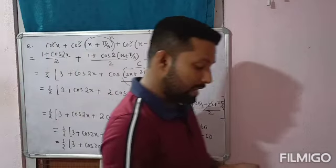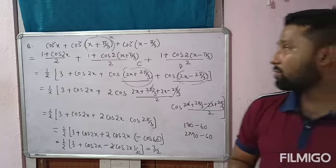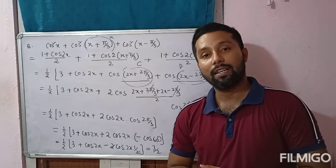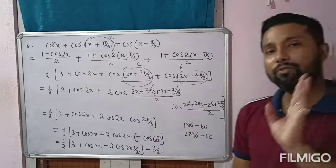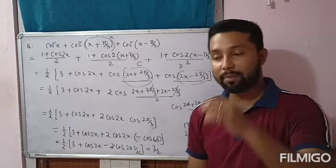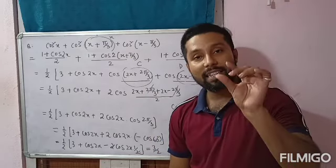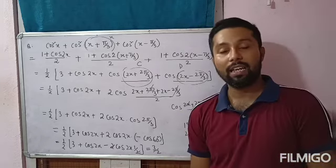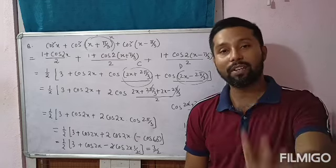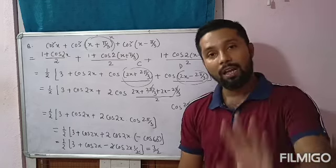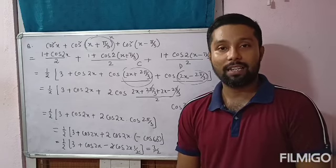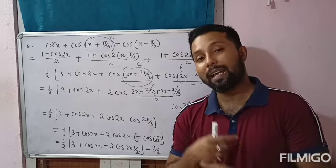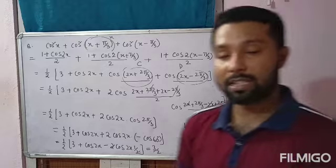Now cos(2π/3) means 120°, which lies in the second quadrant where cosine is always negative. 120° = 180° − 60°, so cos(120°) = −cos(60°) = −1/2. Therefore, this becomes (1/2) × [3 + cos 2x + 2 cos 2x × (−1/2)] = (1/2) × [3 + cos 2x − cos 2x] = (1/2) × 3 = 3/2, which is the right hand side. This is an important question — the key is knowing which formula to use.